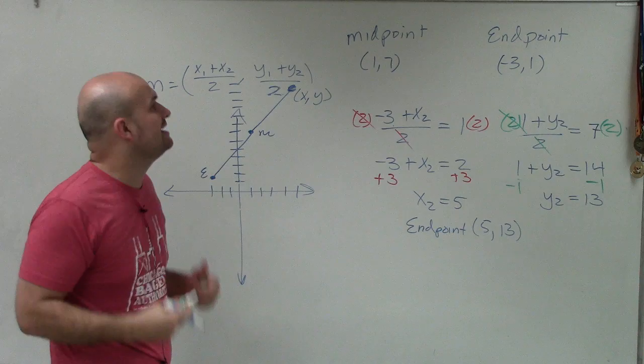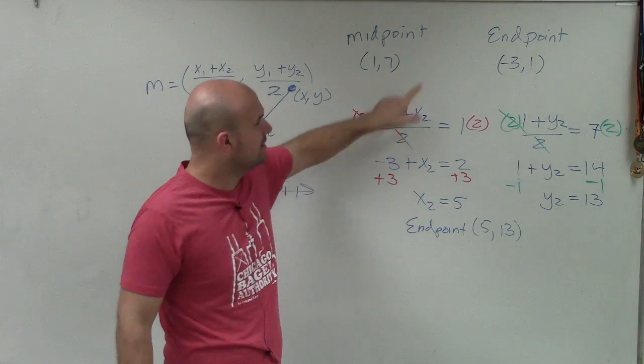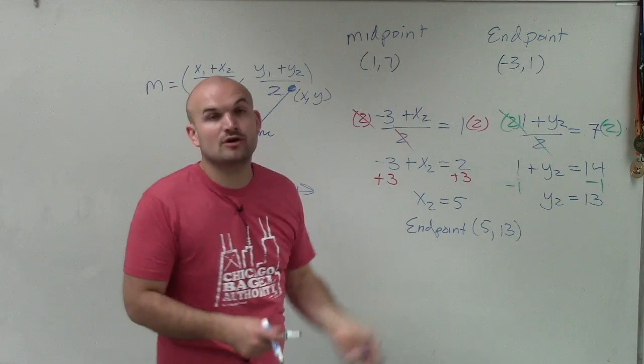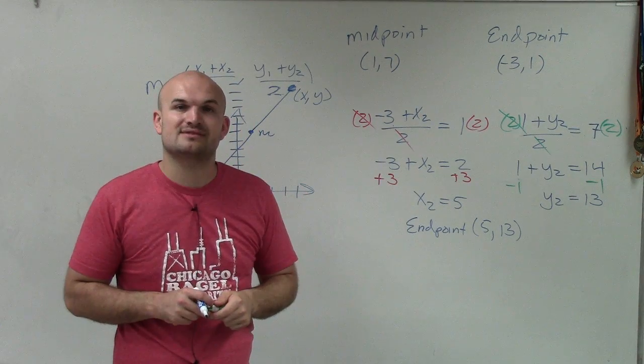So when provided a midpoint and an endpoint, break up the midpoint formula, set them equal to their values of your midpoint, and then go ahead and solve for your still-missing endpoint. Thanks.